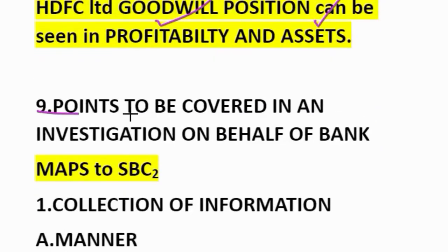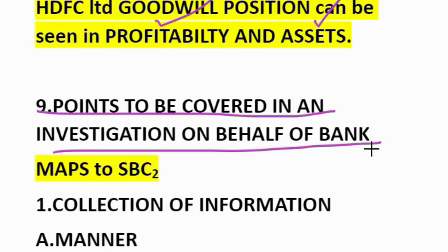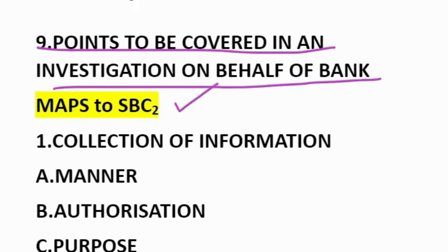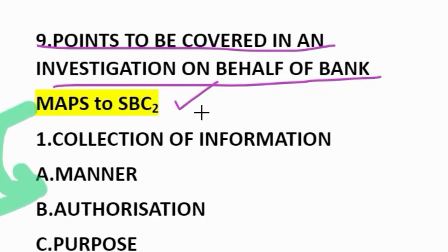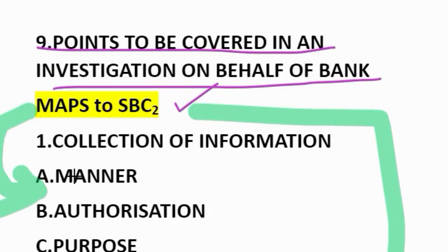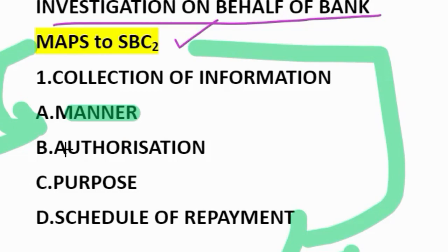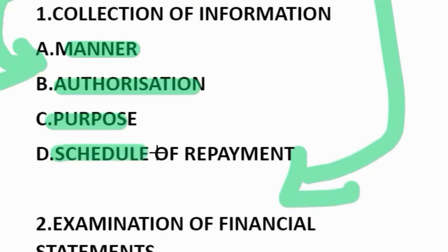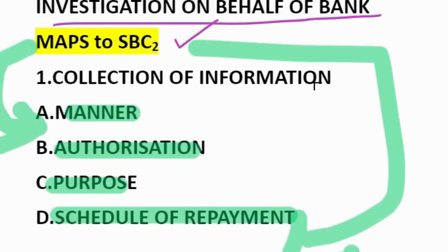Ninth question: points to be covered in an investigation on behalf of a bank. How to remember? MAPS to SBC — Bangalore SBC. MAPS comes under collection of information. M stands for manner in which the borrower proposes to invest the amount of loan. A for authorization — authorization under memorandum or articles of association to borrow money for the purpose for which the loan will be used. P for purpose — purpose for which the loan is required. S for schedule — schedule of repayment of loan submitted by the borrower. MAPS comes under collection of information.